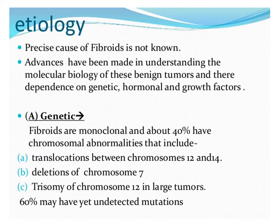The chromosomal problems include: translocation between chromosomes 12 and 14, deletions of chromosome 7, and trisomy of chromosome 12 in large tumors. Among hormonal effects, fibroids do not occur before menarche or after menopause — they are hormone dependent. The two hormones on which fibroids are dependent are estrogen and progesterone. Certain growth factors like endodermal growth factors and insulin-like growth factors are also responsible.